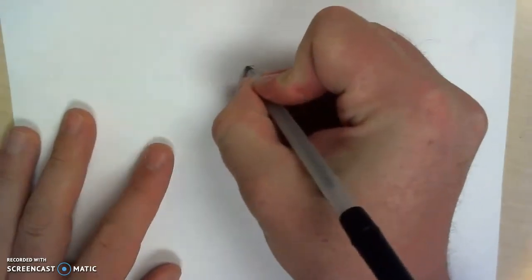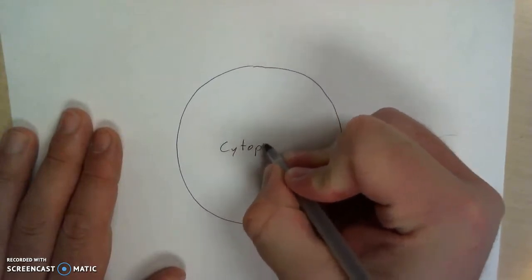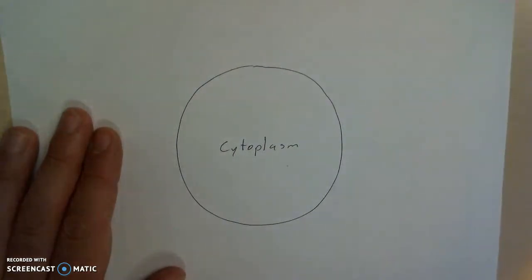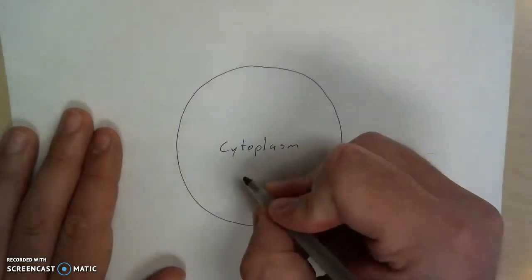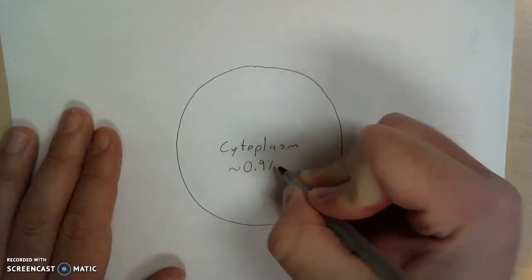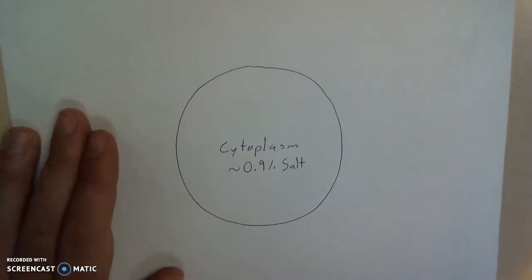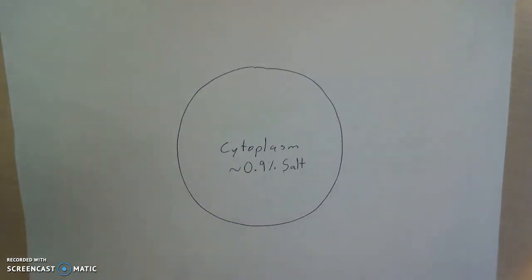So the first thing I like to start with is just a cell. So we're gonna have a circular cell here. Inside the cell we'll have the cytoplasm. And one detail I like to point out about the cytoplasm and the interior of cells is that they're all pretty much the same. There's some deviations but they're all pretty much the same. In essence, the inside of a cell is about 0.9% salt. Of course the cytoplasm isn't only salt, but the cytoplasm behaves just like a solution that has about 0.9% salt.